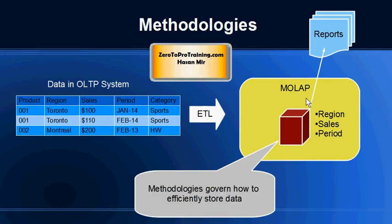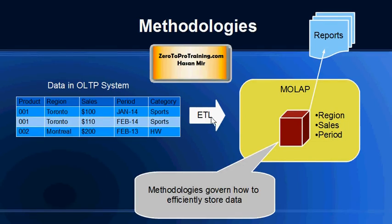Pre-calculated data will be kept in the warehouse based on these dimensions. How to store data efficiently is governed by various methodologies. This ETL here indicates the extract, transform, and load process — the process of moving data periodically from the OLTP system into a warehouse.